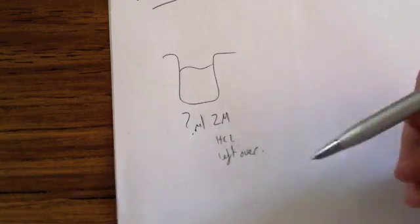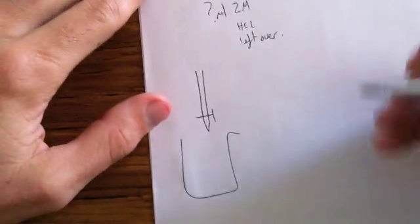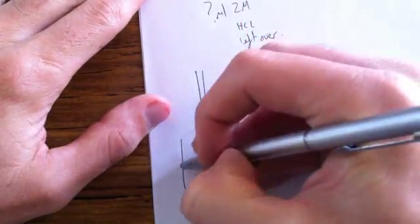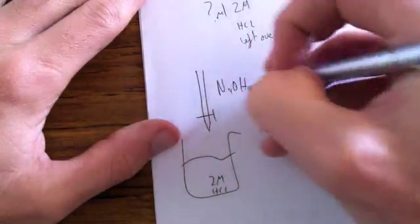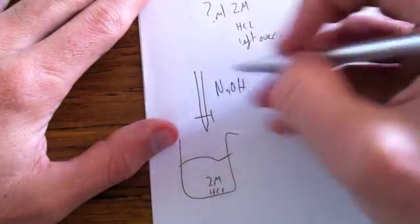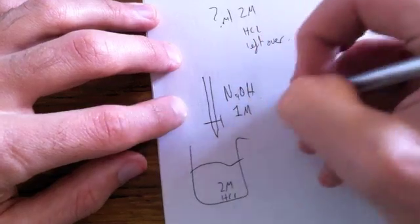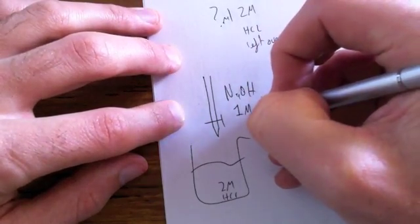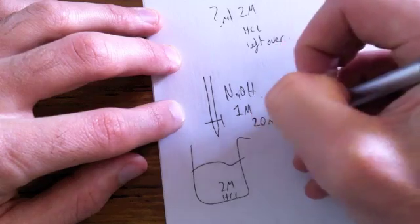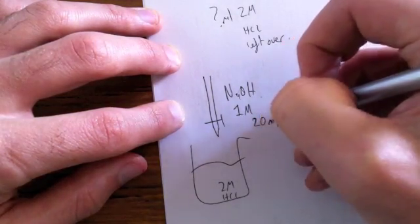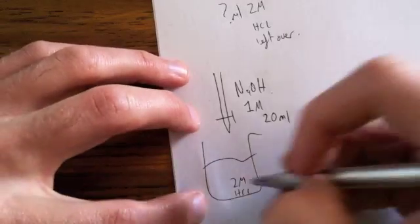Now, we need to find out how much is left over, so therefore we need to titrate. And we titrate with a strong base, which is NaOH, and we work out 2 molar HCl. We use a certain amount of moles of this, so I'm going to say we use 1 molar, and we use about 20 ml.